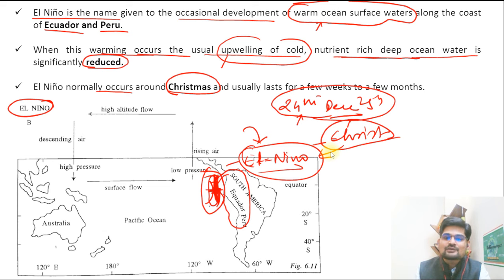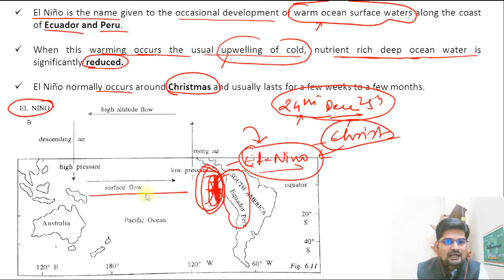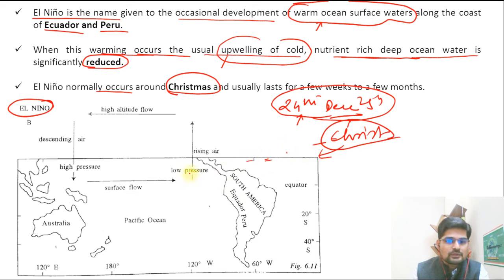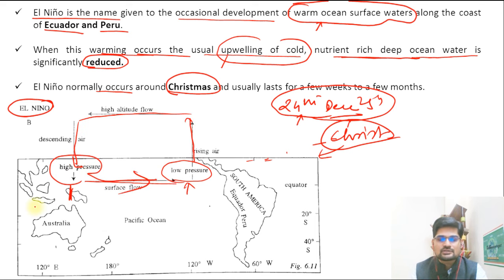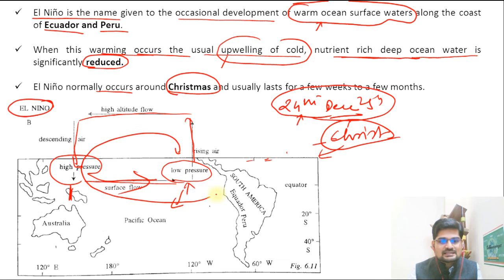During El Niño, there is low pressure on the American coast and high pressure near Australia, which is against the normal circulation pattern. Normally, the Walker cell circulation flows in the opposite direction. In El Niño, warm surface water on the eastern side causes air to rise there, travel across, and subside — the reverse of the Walker circulation. Let's understand the mechanism further.